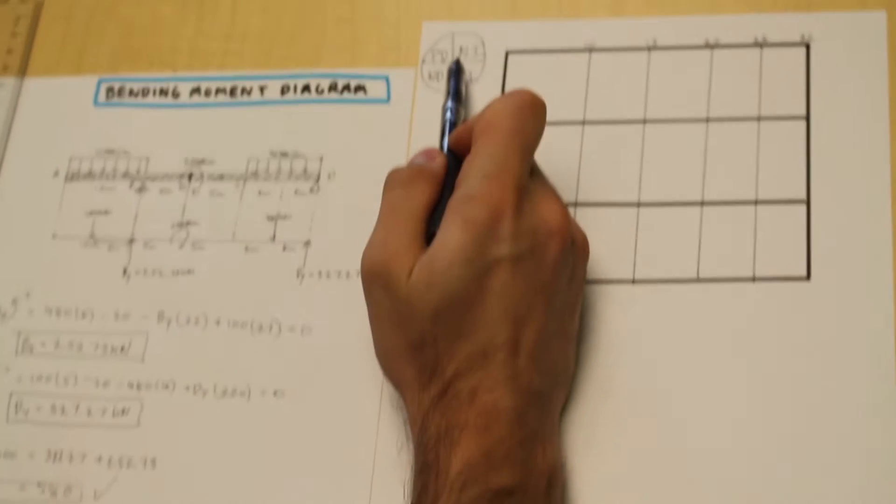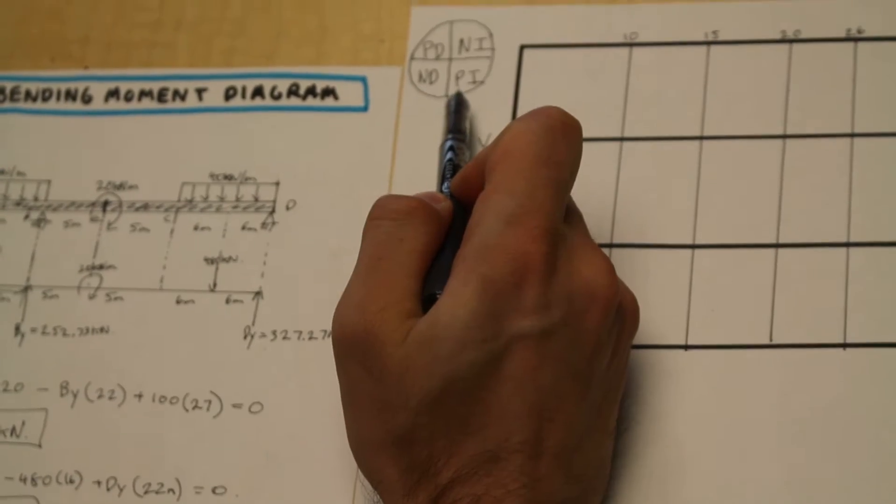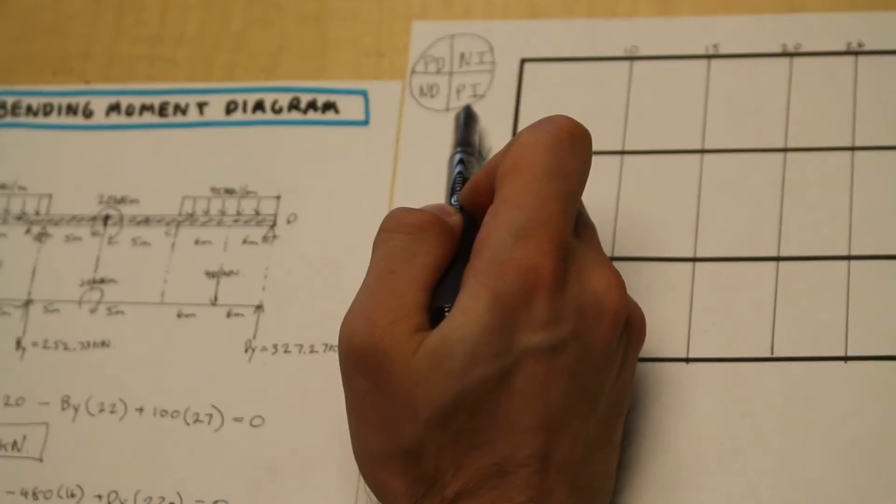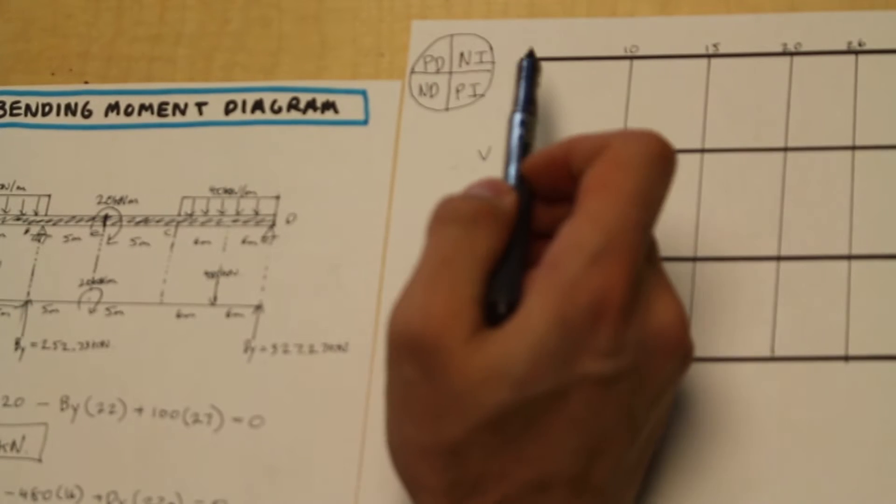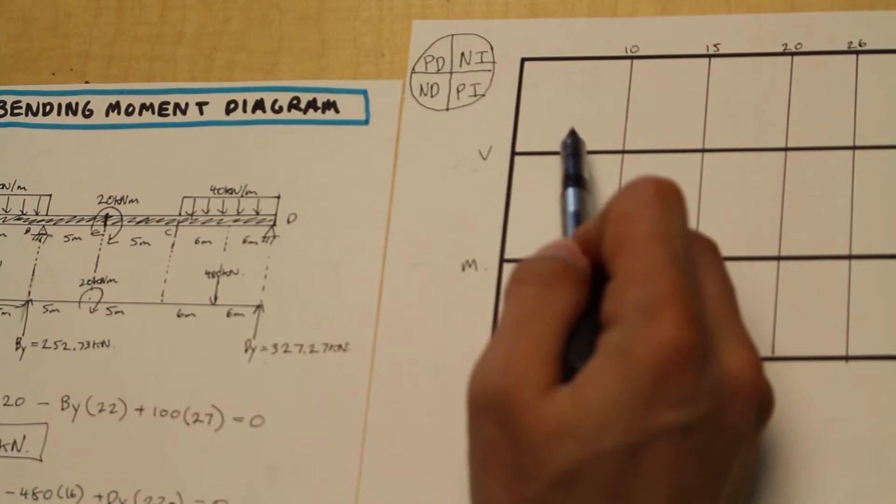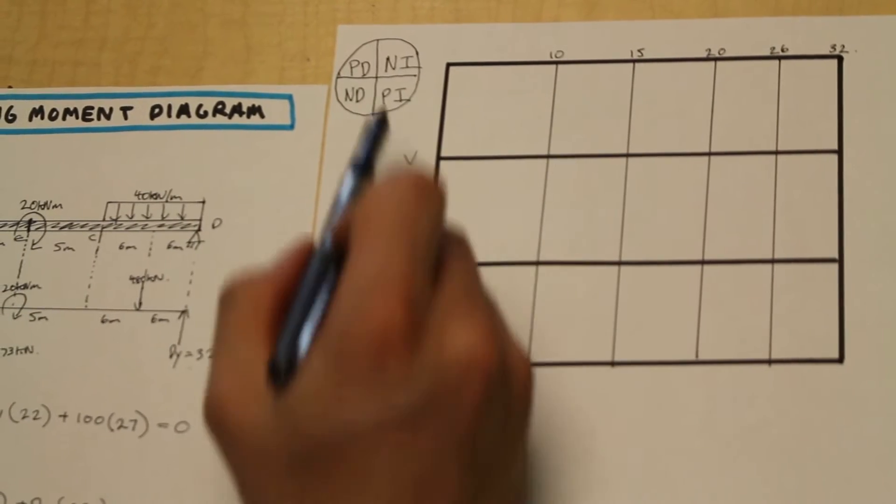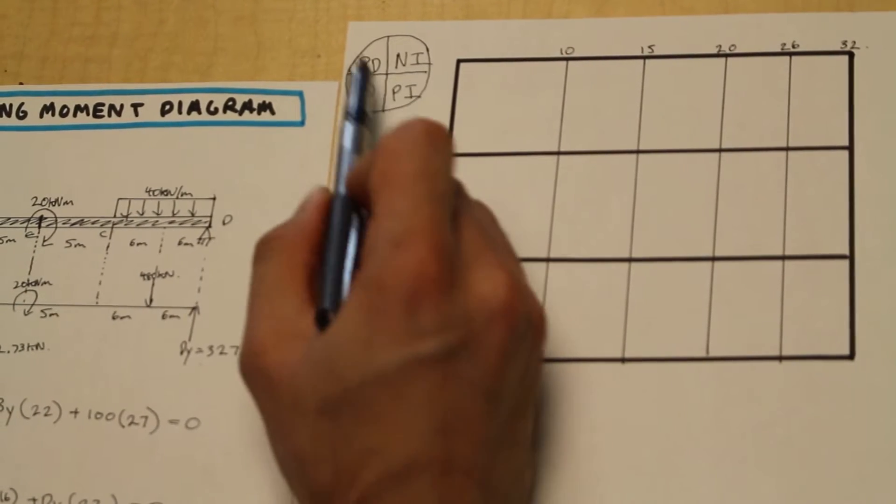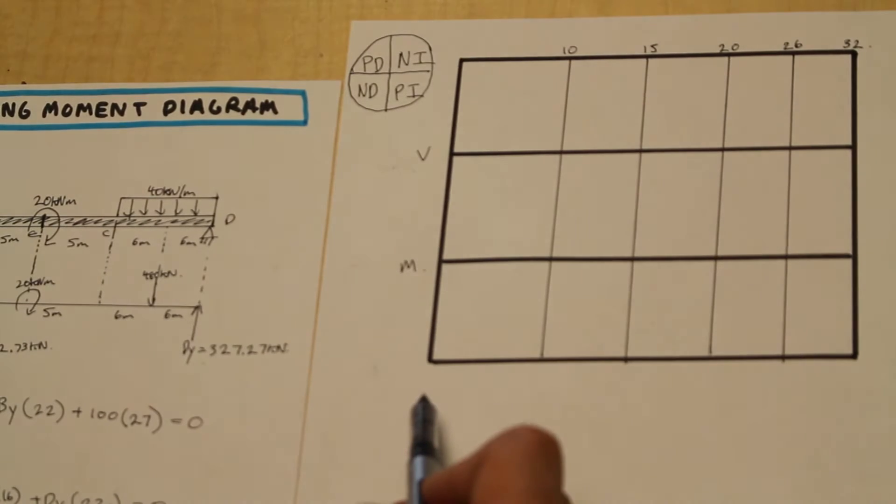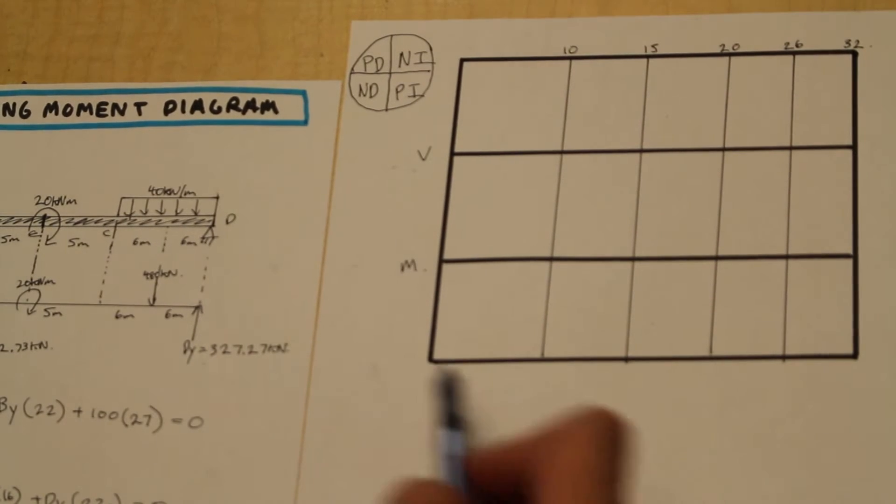Okay, so we have positive decreasing, negative increasing, negative decreasing, and positive increasing. So that means, depending on whether the shear force is increasing, decreasing, positive or negative, the shape of the circle is going to dictate the shape of the curve of the moment.